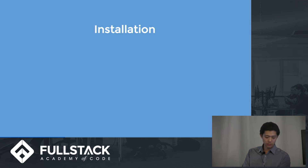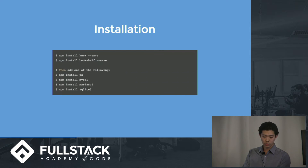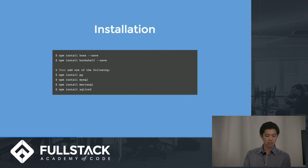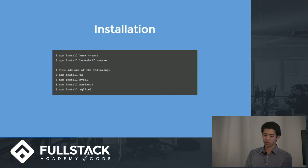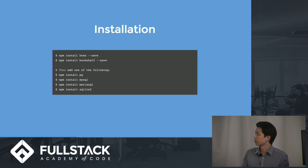In terms of installation, we first have to install Knex since Bookshelf is built on it, and you should probably do this via npm. Then install Bookshelf, and also install whichever database client you prefer. Since we're familiar with using Postgres, we would run npm install pg.